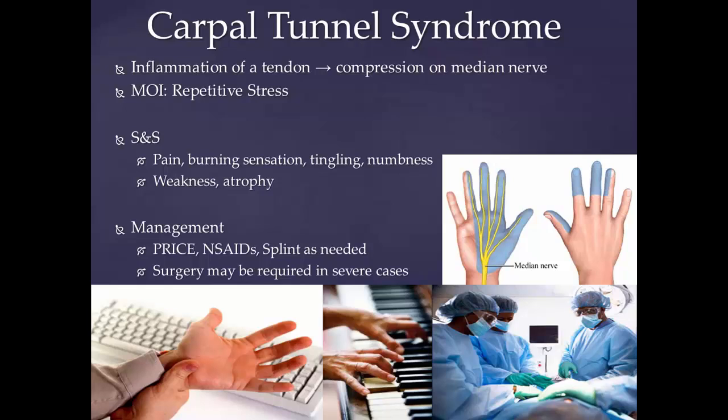Most cases of carpal tunnel syndrome have an unknown cause, but it can be associated with any condition that causes pressure on the median nerve at the wrist. Patients experience numbness, tingling, and burning sensations in the thumb and fingers — particularly the index and middle finger and the radial half of the ring finger — as these receive sensory and motor function from the median nerve. Ache and discomfort can also be felt more proximally in the forearm and upper arm.